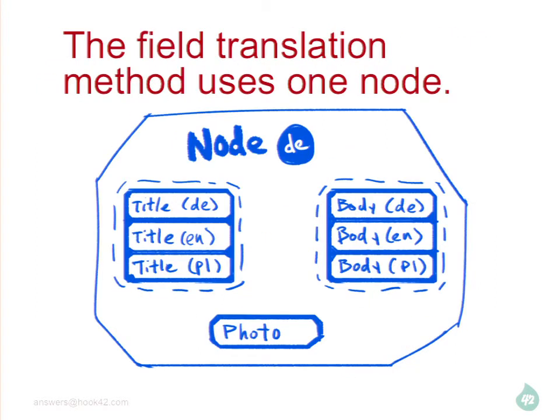The alternative is called field translation — it's different. You have one node, and then you decide which fields you want to translate. In this case you have a German source node and you decide to translate the title and the body, but not the photo because it doesn't have any text on it. You can translate the alt text if you want. So it's very flexible what you choose to translate.